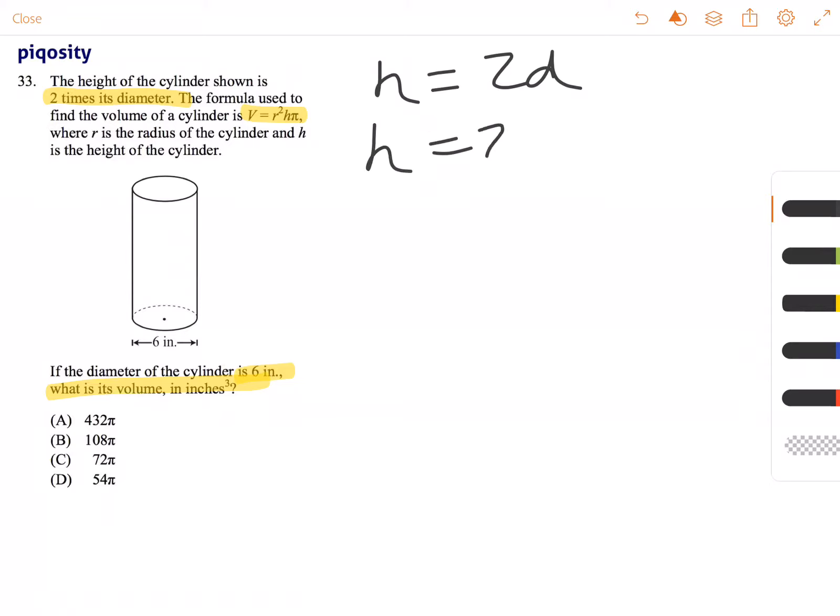So h equals 2 times 6, which is 12. That is the height of the cylinder.